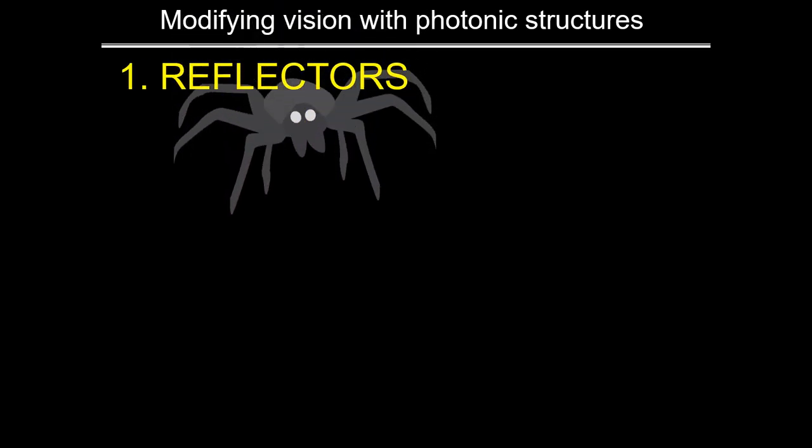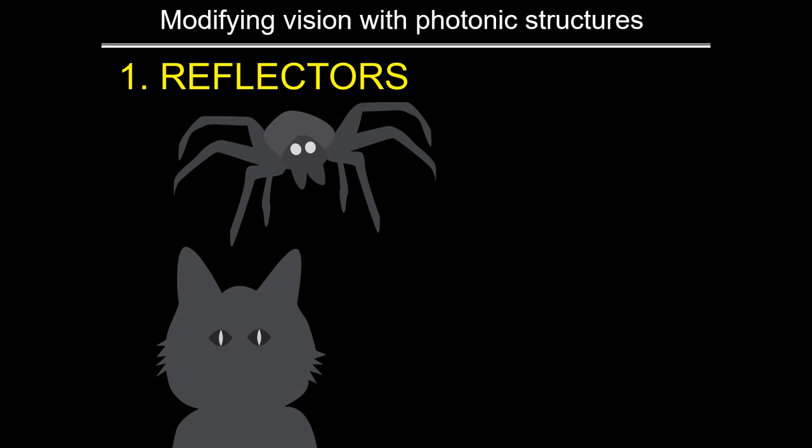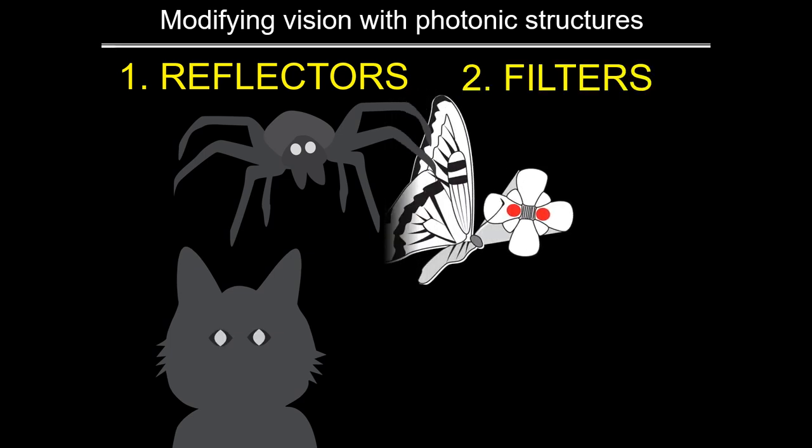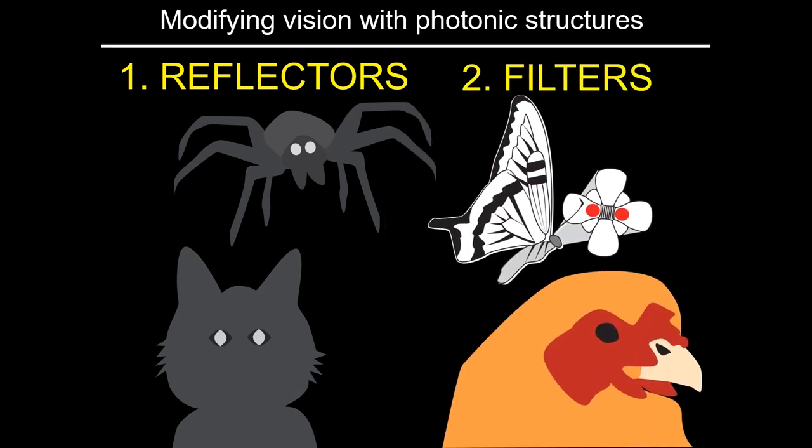Animal visual systems can only be modified by two types of photonic or light-interacting structures: reflective mirrors, which are what makes some animal eyes appear to glow in the dark, or colorful filters like oil droplets expressed in many bird retinas.